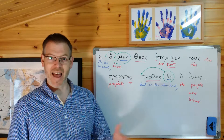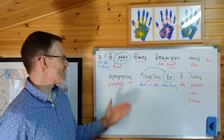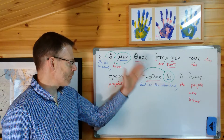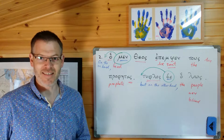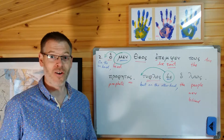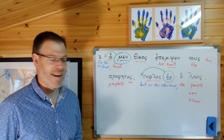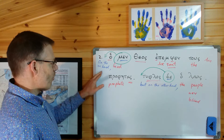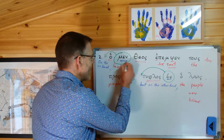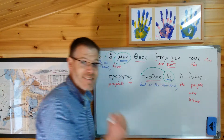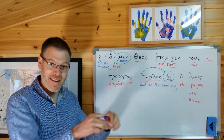A men-de sentence is a sentence which contains a strong or marked contrast of some kind. The way to highlight that in English is 'on the one hand, but on the other hand' - very wooden, I realise that. But if you do that whenever you find a men, look ahead and try to find a de, and then write 'on the one hand, but on the other hand' in there.